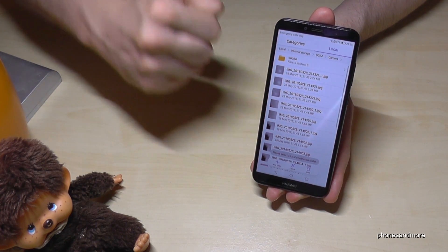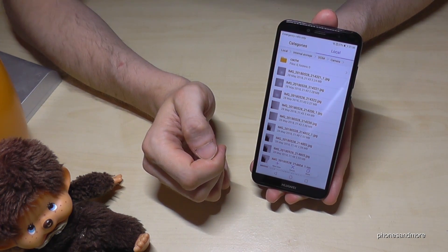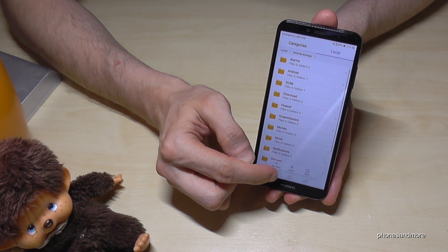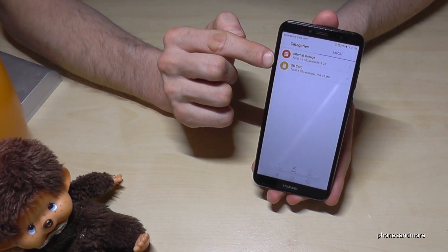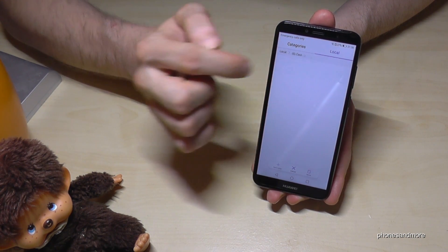So then you go back, back, back until you see the local page here and then now you go to the SD card.